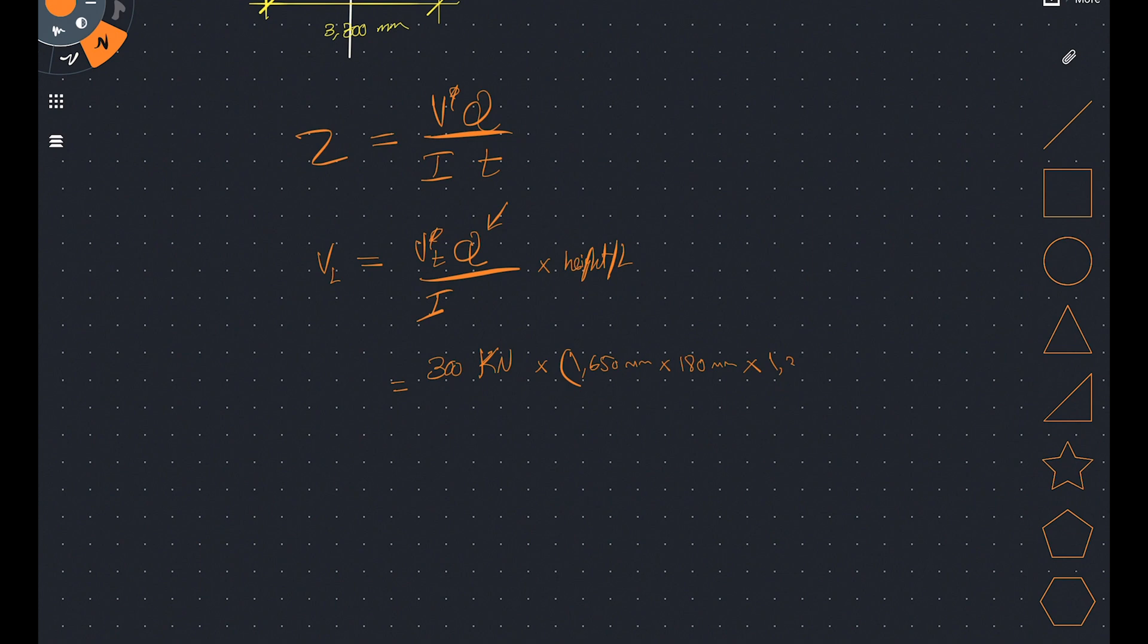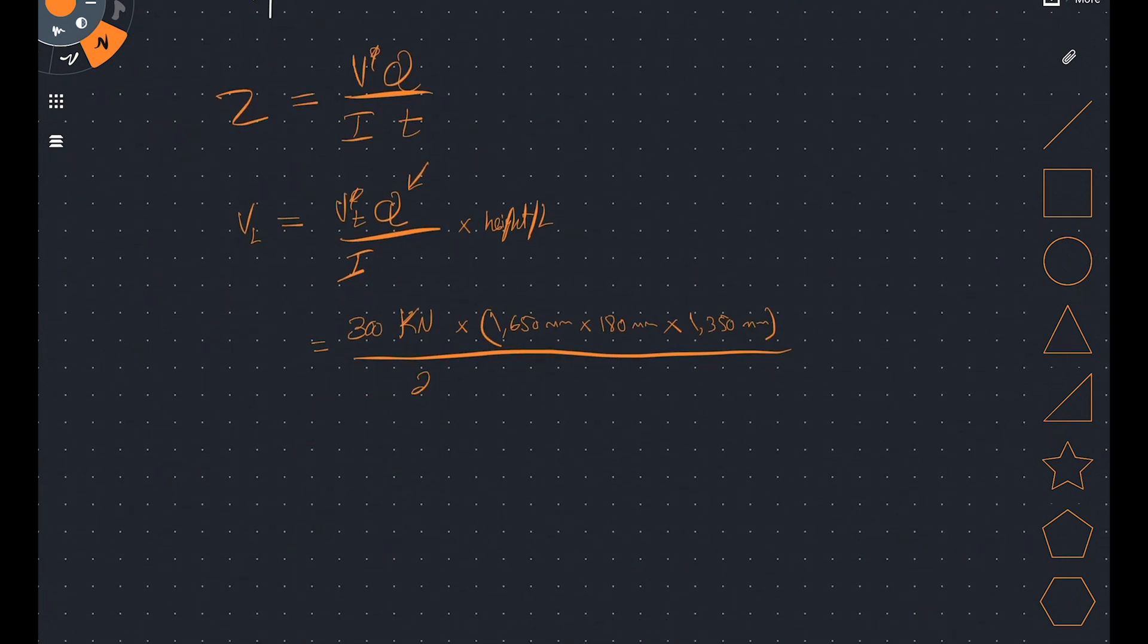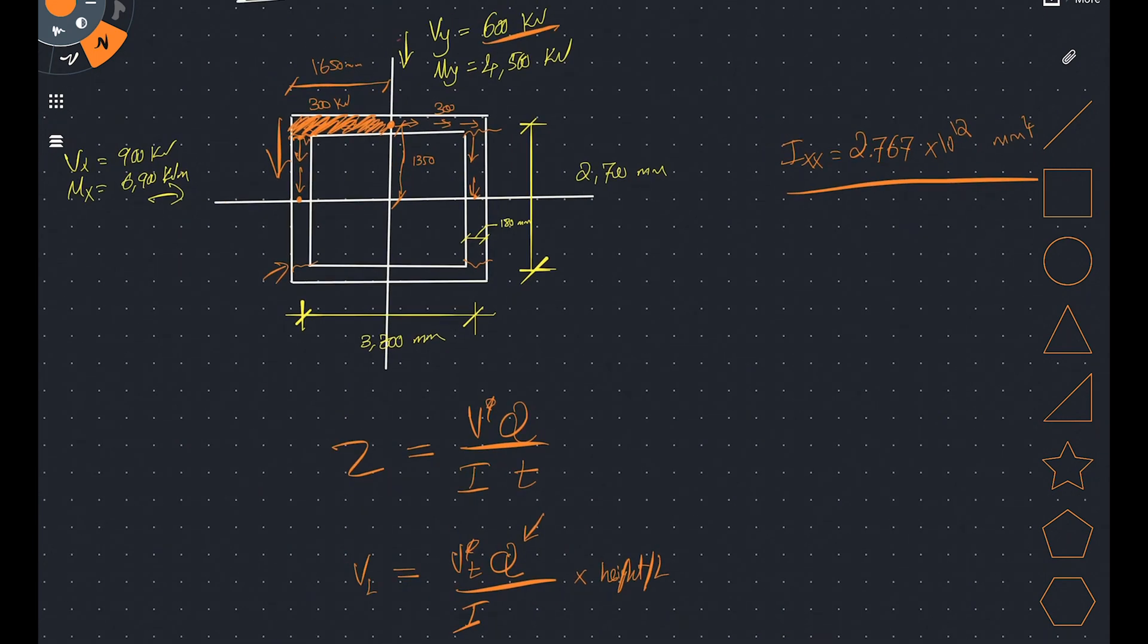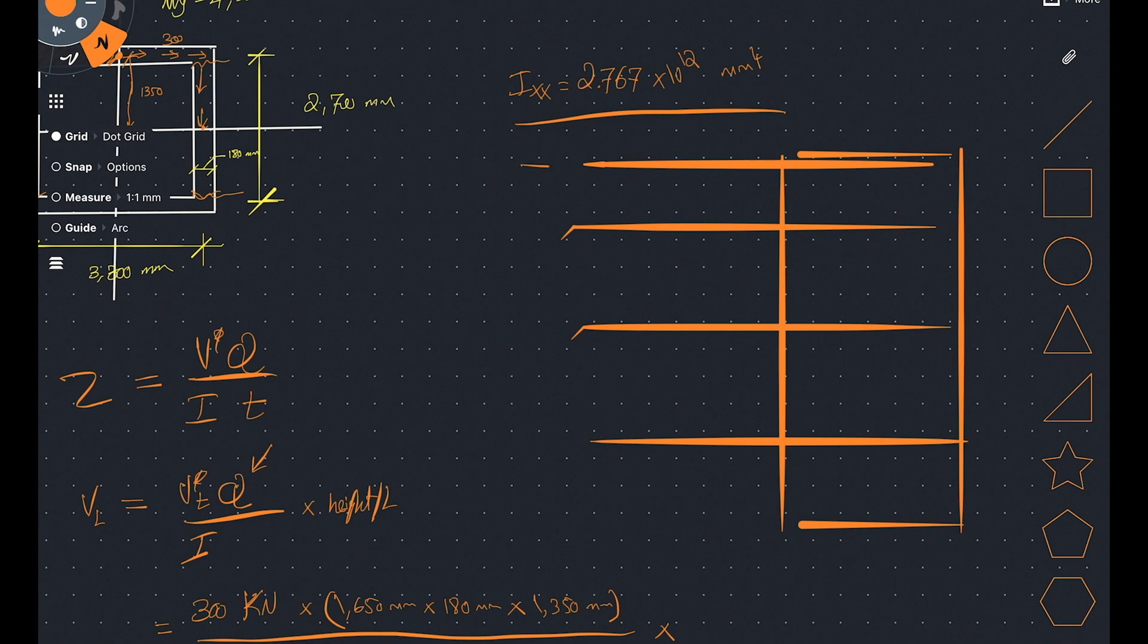My second moment of area I've already calculated previously when I was working out my flexural stresses, which is 2.767 times 10 to the 12. Now what I'm left with is my height, which is the overall height of my core wall. If you think about it, if this is my core wall and I have a lot of floor slabs, at each level I have a horizontal force going into the core wall. This horizontal force transfers into longitudinal shear and it keeps stacking up until it reaches the 600 kilonewtons at the bottom.